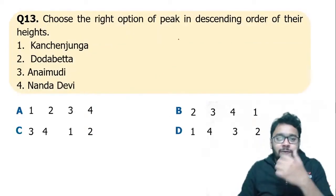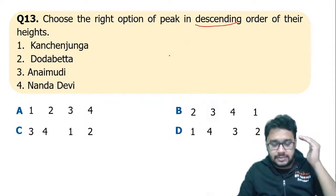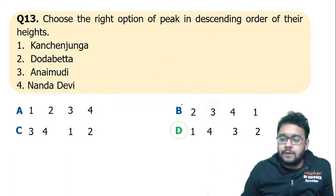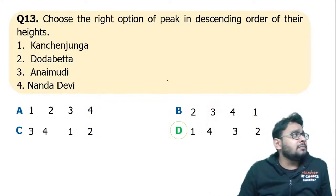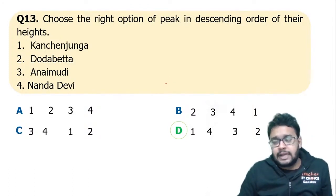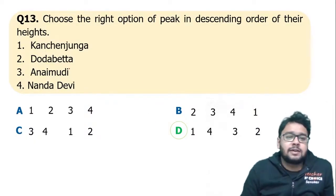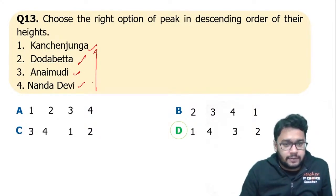Choose the correct option of peaks in descending order of their heights — sabse ucha sabse pehle, sabse chota sabse last mein. The correct descending order is: Kanchenjunga, Nanda Devi, Anai Mudi, and Dodabeta. So the sequence is one, four, three, two.